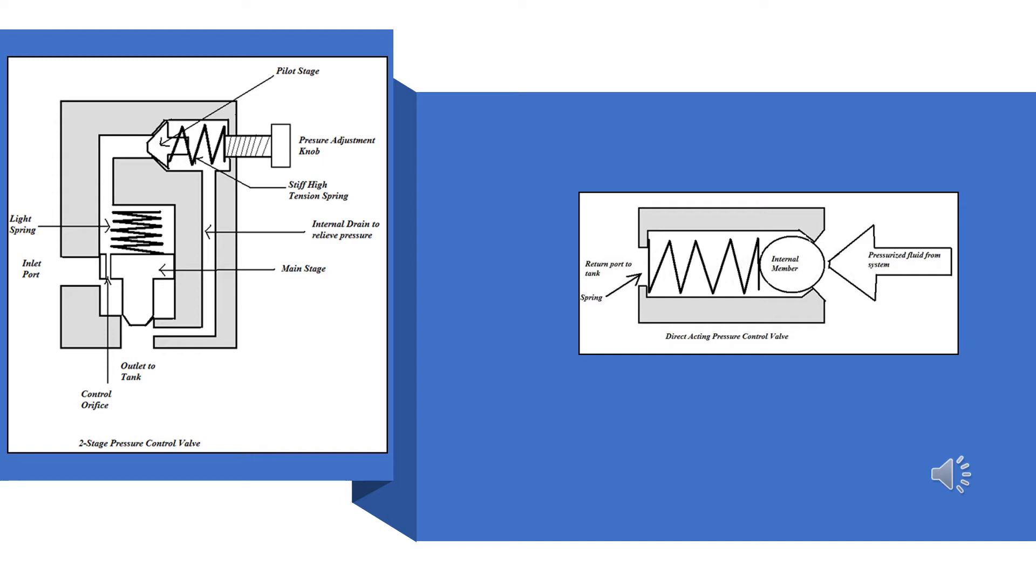All of the valves that are of this design work in the same manner, regardless of what their name is. If you get one of these figured out, you have them all figured out. Now, the only other item to point out is that some of these valves can be drained internally, which means that the oil that vents around the dart can be led to the secondary port if the secondary port is not under pressure. But we are going to see applications where the secondary port is under pressure, and in these cases, the valve must be drained externally. And when that happens, there is an emblem included on the valve to let the reader know this.